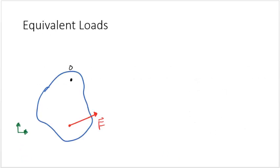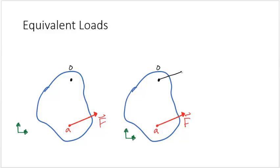An extremely important concept in statics is the concept of equivalent loads. Here we are given a system with force F acting at point A. Without altering the system at all, I can add an equal force F at point O and an equal and opposite force F at point O. These two systems are equal because no resultant force has been added. Note that the opposing force at O cancels out, so the net force on the system is still F at A.